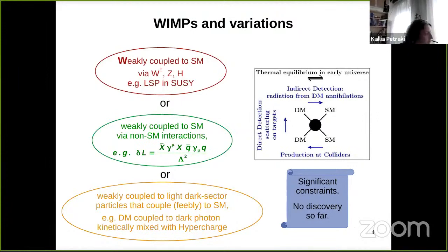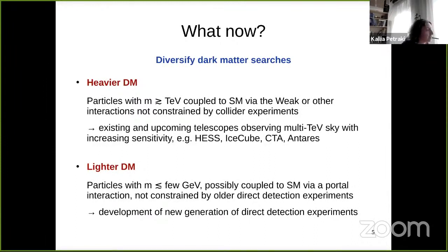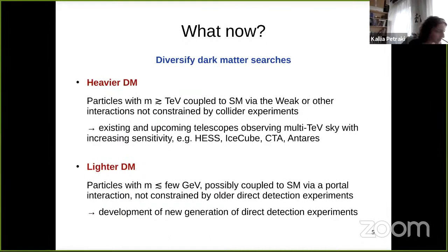So far we have not detected anything, so the question is: where do we go? There are two broad directions — we can consider heavier dark matter, which is less constrained by current experiments, or lighter dark matter, for which new direct detection experiments are being developed. The previous talk was about lighter dark matter; I will talk about the possibility of heavier dark matter — specifically multi-TeV dark matter.